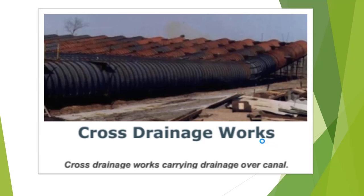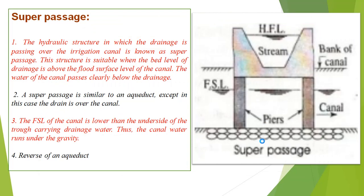The second category is cross-drainage work carrying drainage over the canal. A super passage is a hydraulic structure in which the drainage passes over the irrigation canal. A super passage is similar to an aqueduct, except that in this case the drain is over the canal, whereas in an aqueduct the drain is below the canal.